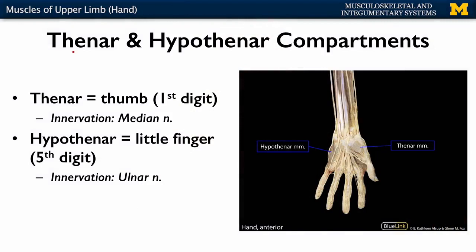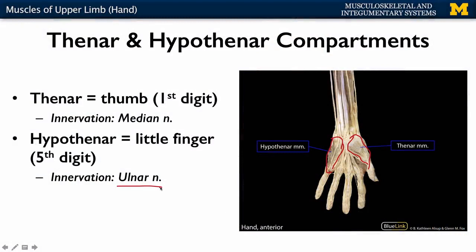Two terms I want you to know right off the bat: thenar and hypothenar. Thenar indicates muscles associated with your first digit, or the thumb, and hypothenar is associated with your fifth digit, or your pinky finger. It's important to know the difference because they have separate innervation. Most muscles of the hand are innervated by the ulnar nerve, including the hypothenar compartment. The thenar compartment has its own individualized innervation, which is the median nerve — specifically the recurrent branch.